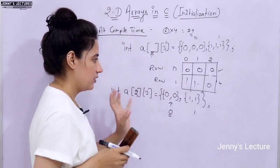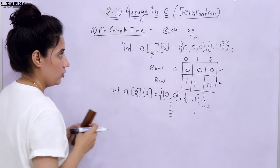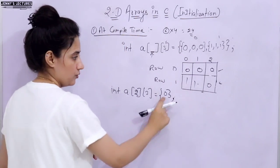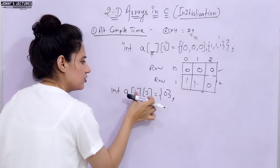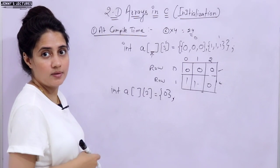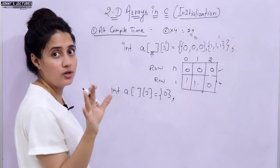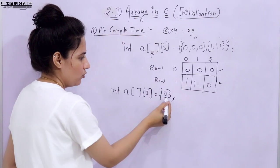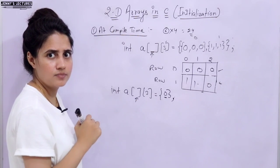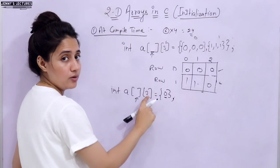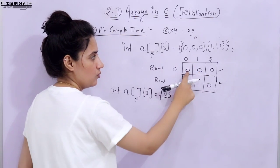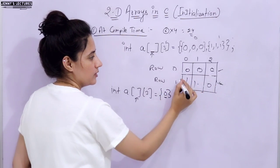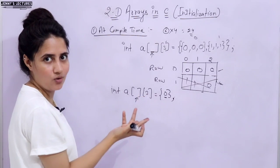One more important point: if you give only a value like 0 and don't specify the row size, the compiler initializes only one row. With 3 columns, it fills 0, 0, 0 for that single row. There would be no second row. If you try to print a second row, you'll get garbage values because it was never initialized — so it behaves like a 1D array.